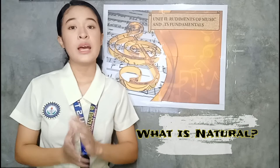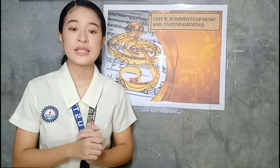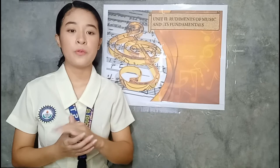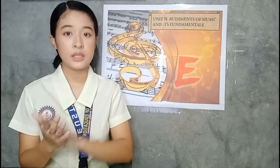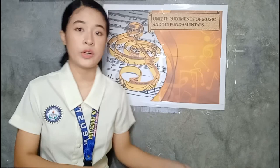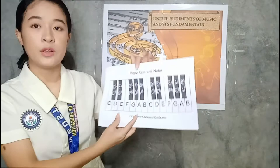What is natural? Natural cancels sharps and flats. When you see a natural sign next to a note, it means that any sharp or flat already in effect is cancelled for the rest of the measure. Natural notes are the notes A, B, C, D, E, F, and G, represented by the white keys on the piano keyboard.